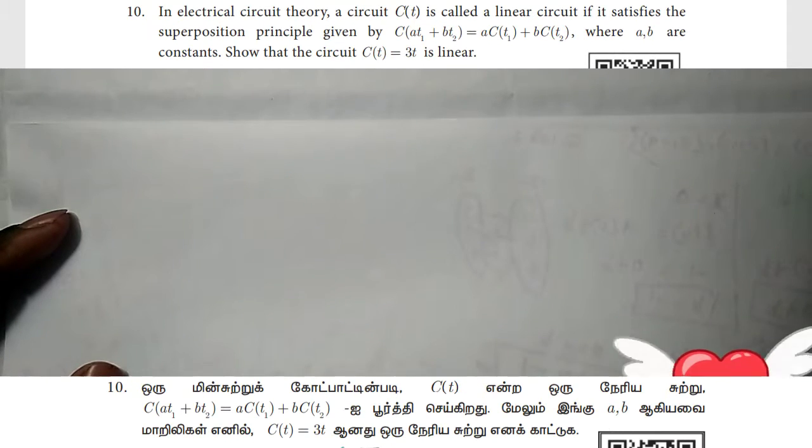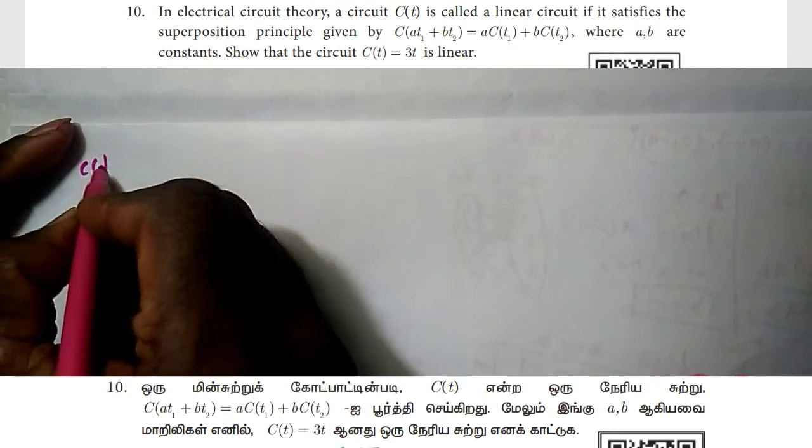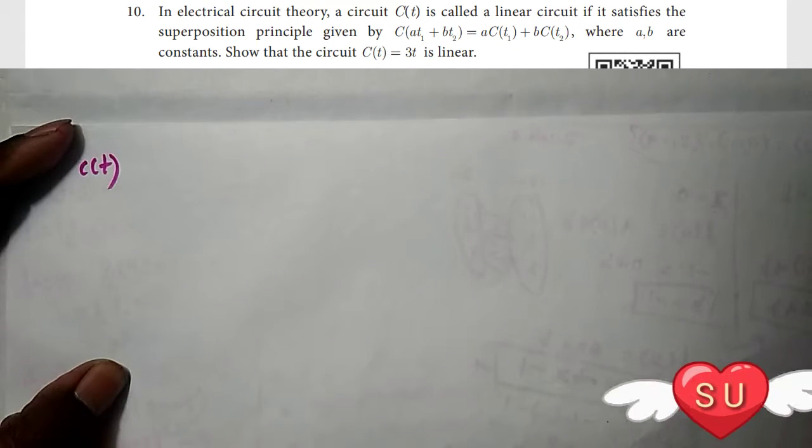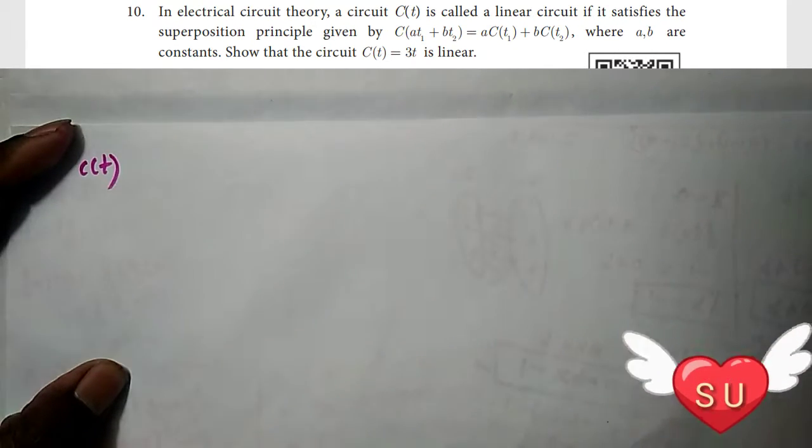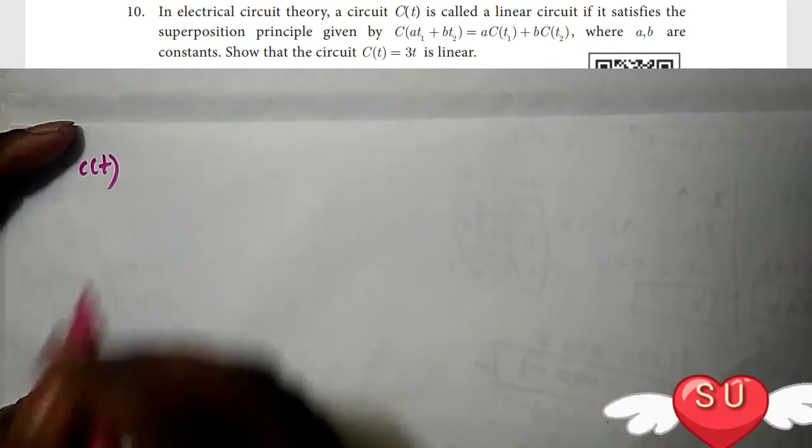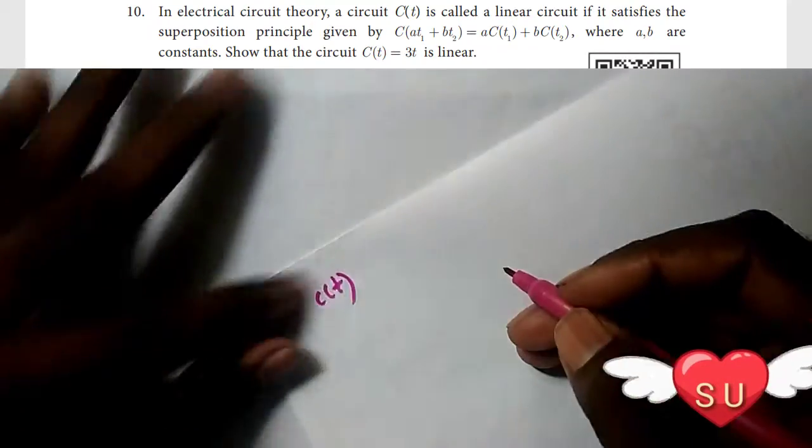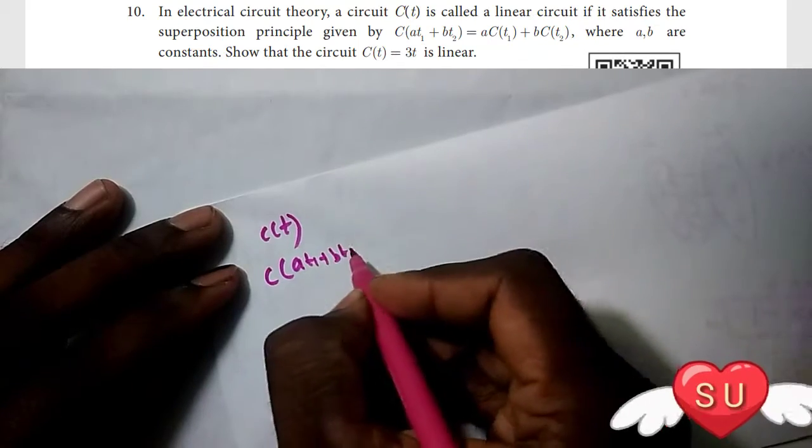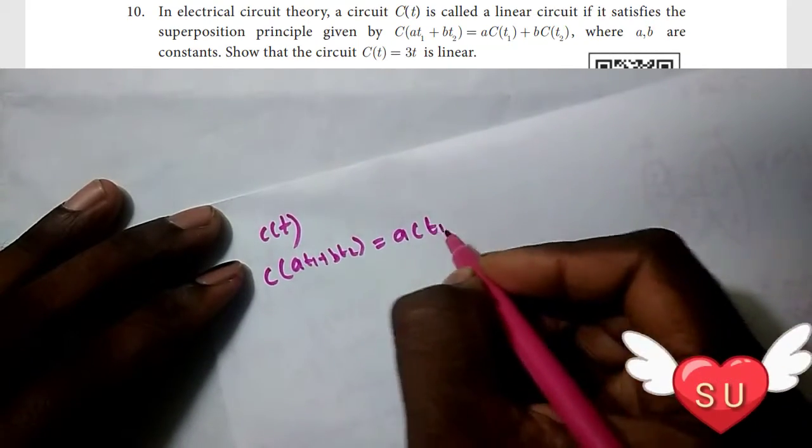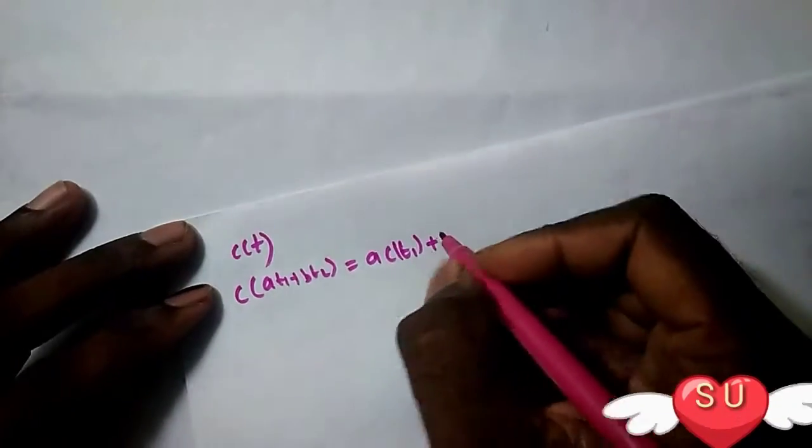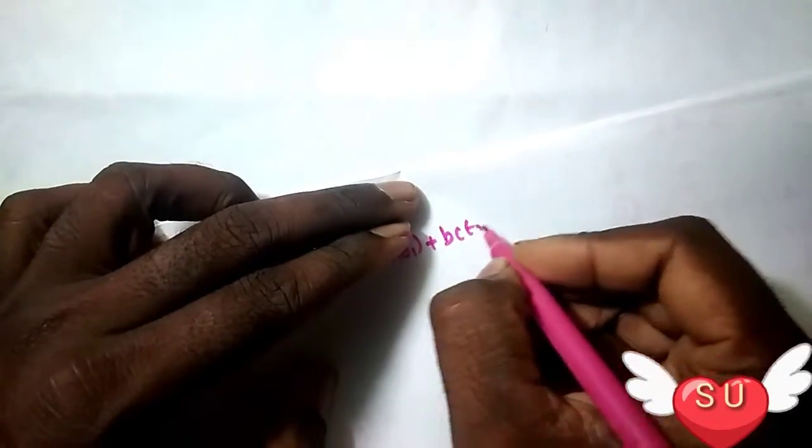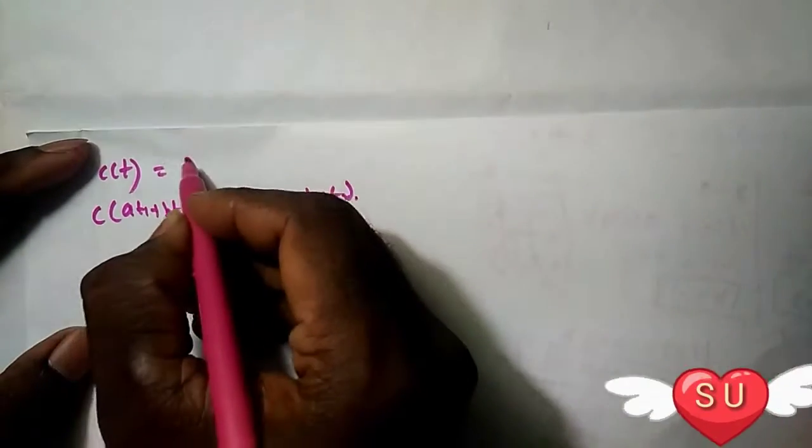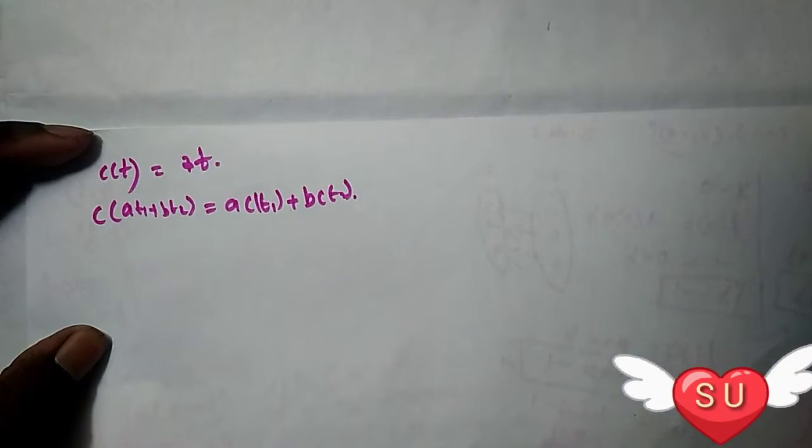C of T is called a linear circuit if it satisfies the superposition principle, given by C of A T1 plus B T2 equals A C of T1 plus B C of T2, where A and B are constants. Show that the circuit C of T equal to three T is linear.